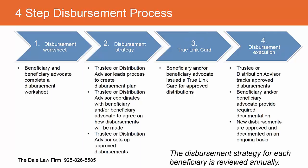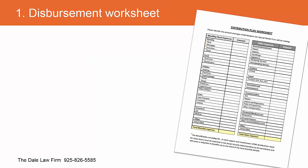New disbursements are approved and documented on an ongoing basis. It's impossible to anticipate every distribution that might come up, so things do come up that were not expected. One of the handouts available to download is a distribution plan worksheet done in different categories. We're often looking for fixed expenses, and first are what are called ISM issues — things like payment of rent, mortgage, insurance, taxes, groceries, restaurants, heating, electricity, trash, garbage, water, and sewage.